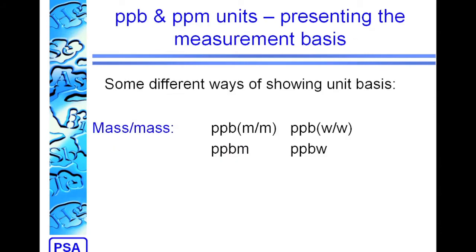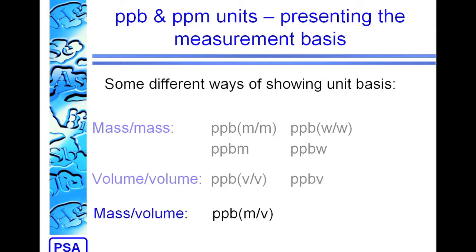The way that the basis is shown for PPB is quite variable. Mass-mass units can be shown with either an M for mass or a W for weight, and they can be shown in any of the different ways shown on the screen. Volume-volume is easier as there's only a V for volume, but again there's more than one way of showing it. Mass-volume is easier as there's only really one way to show it, or that could also be shown as weight-volume.